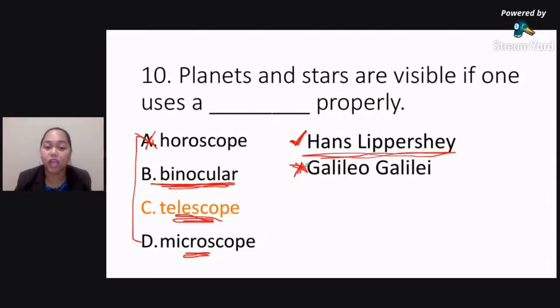So, pag nakita nyo po ito sa LET, huwag nyo pong ipipick si Galileo. Galileo is not the inventor of the telescope. It is Hans Lippershey. Si Galileo lamang po yung unang gumamit nito to study the heavenly objects. So, the correct answer is letter C, telescope.